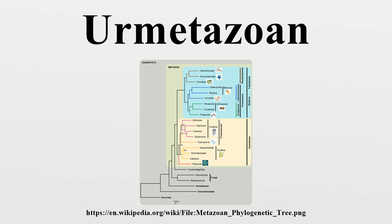It has been perceived as problematic that gastrulation by invagination is by no means universal among eumetazoans. Only recently has an invagination been confirmed in a calcareous sponge, albeit too early to form a remaining inner space.